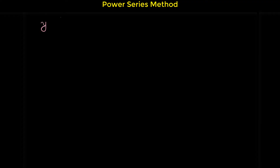In this video we will learn how to solve differential equations with the power series method. The first differential equation is y prime minus 2y equals 0. This differential equation is relatively simple — you may already know how to solve it, and by inspection you can find that e to the 2x is the solution. But in this video we want to learn how to find the solution with the power series method. Let's start.